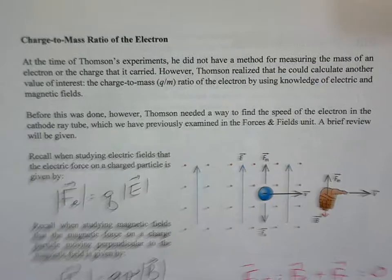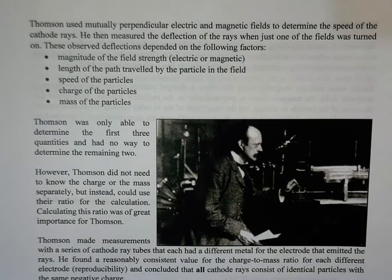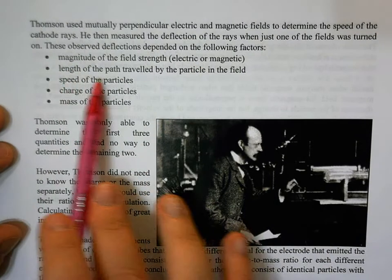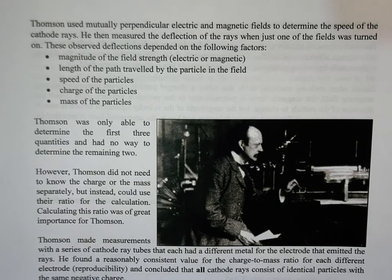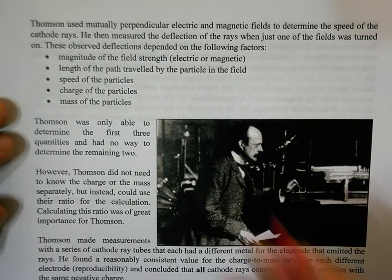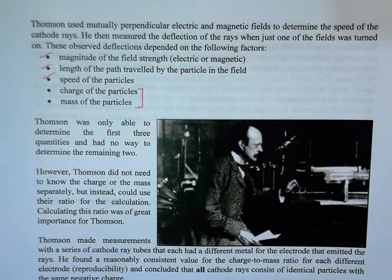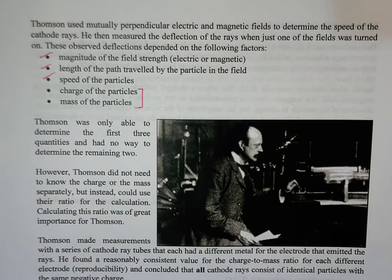When Thomson measured deflection of the rays under electric and magnetic fields, the deflections depended on the field strengths, the length traveled in the field, the speed of the particles, the charge, and the mass. Thomson could handle the first three, but could not determine charge and mass individually. However, by calculating the ratio between them — q/m — he was able to advance his work significantly.